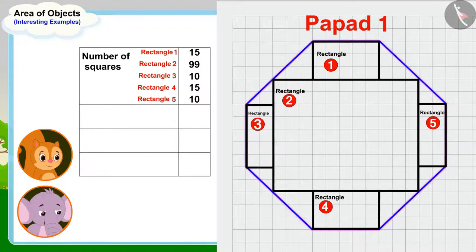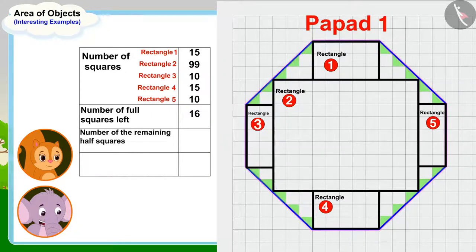Now, I will write the number of full squares left, 16. And finally, the number of the remaining half squares, 20, which is equal to 10 full squares.